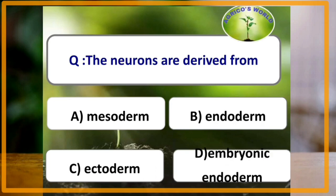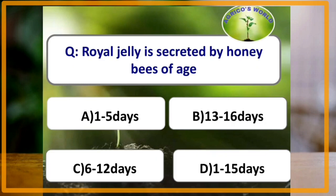The neurons of the nervous system are derived from ectoderm. Royal jelly is secreted by honeybees of age 6 to 12 days.